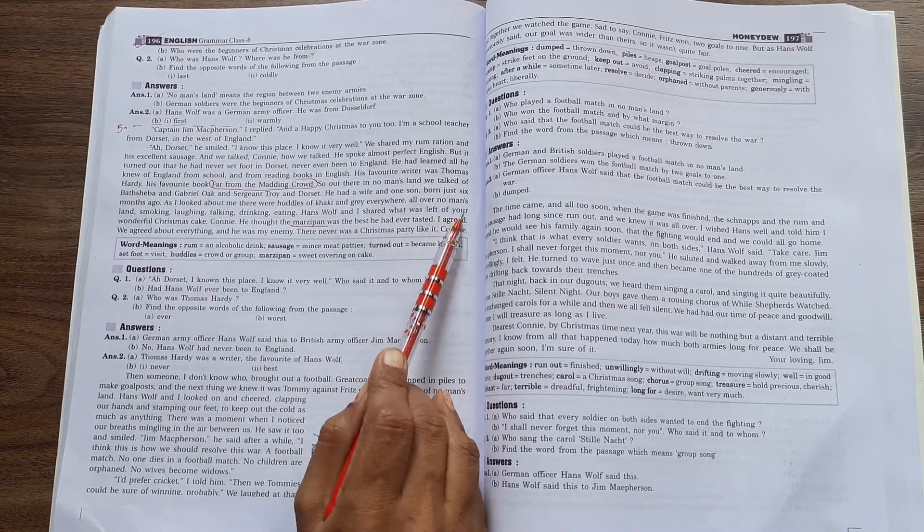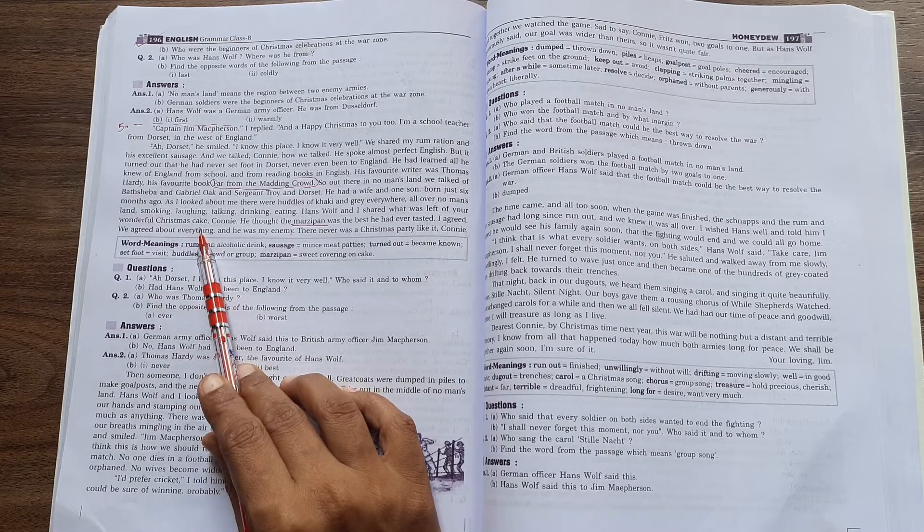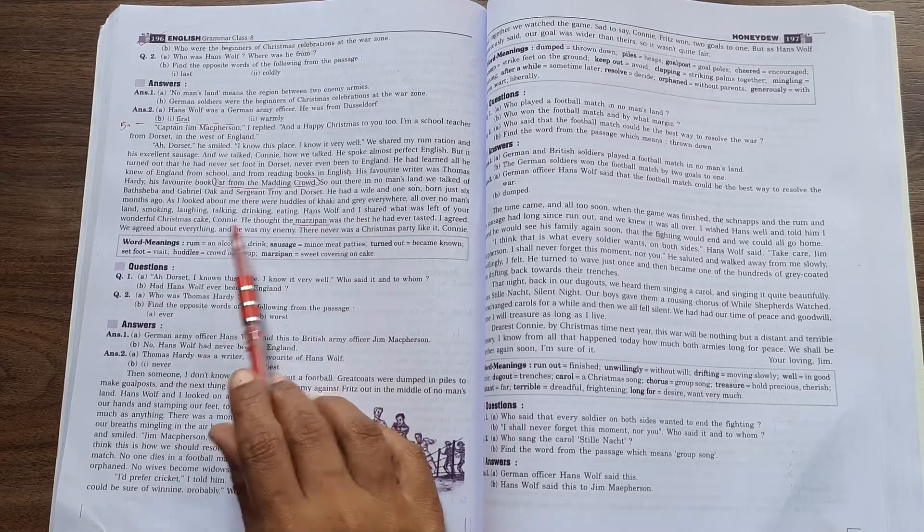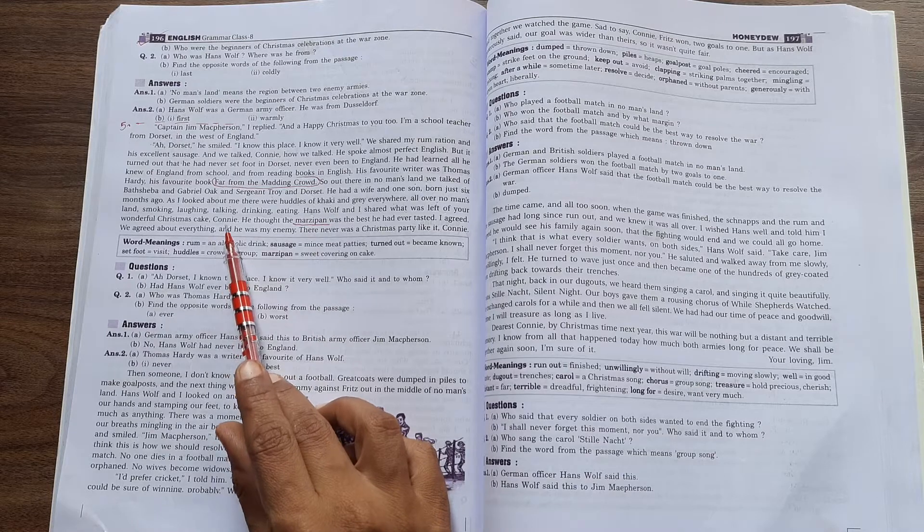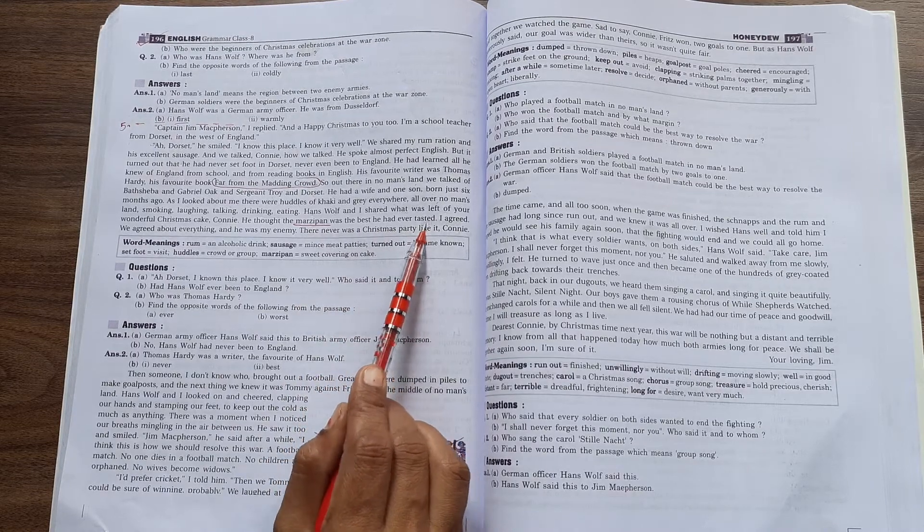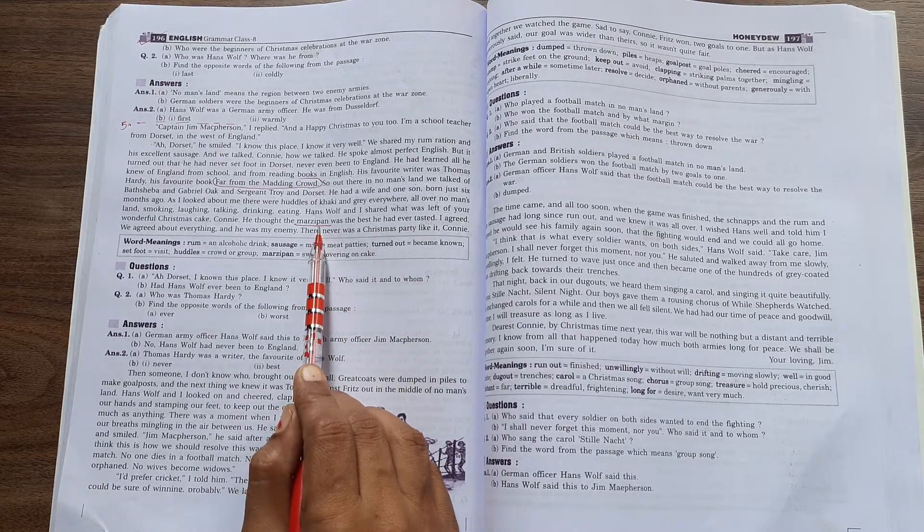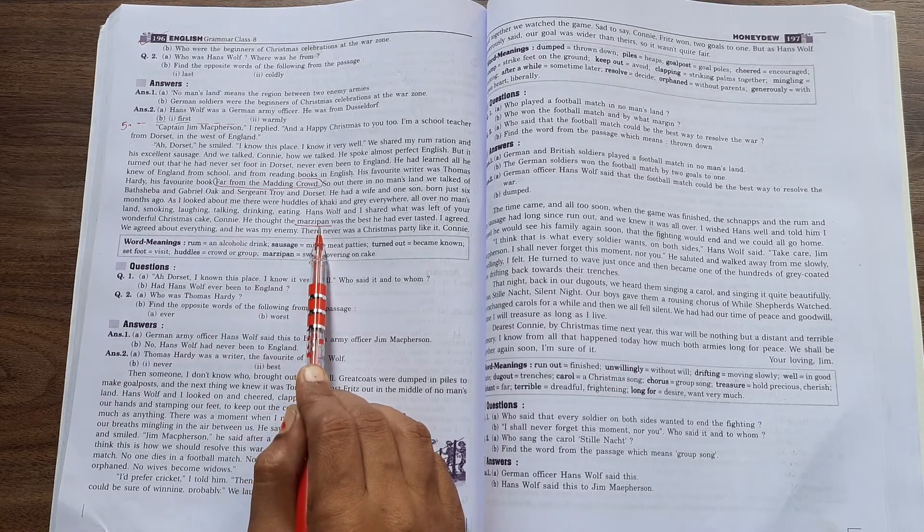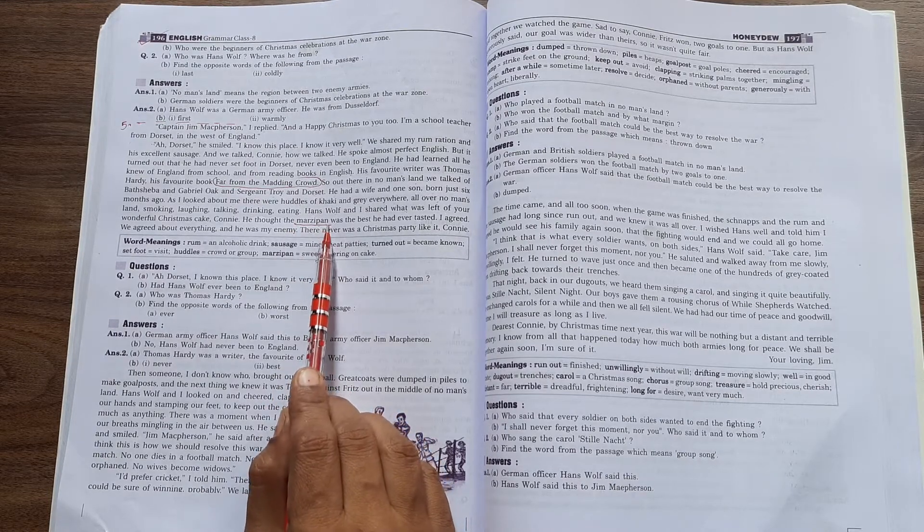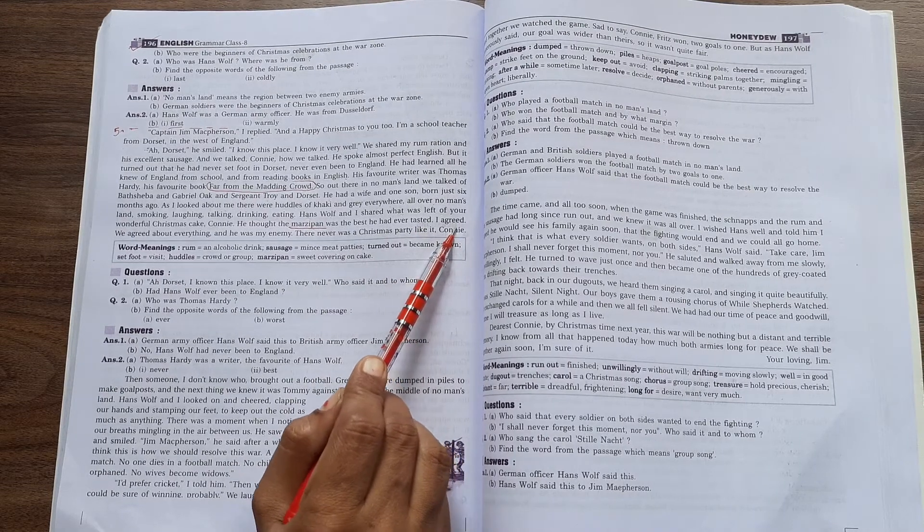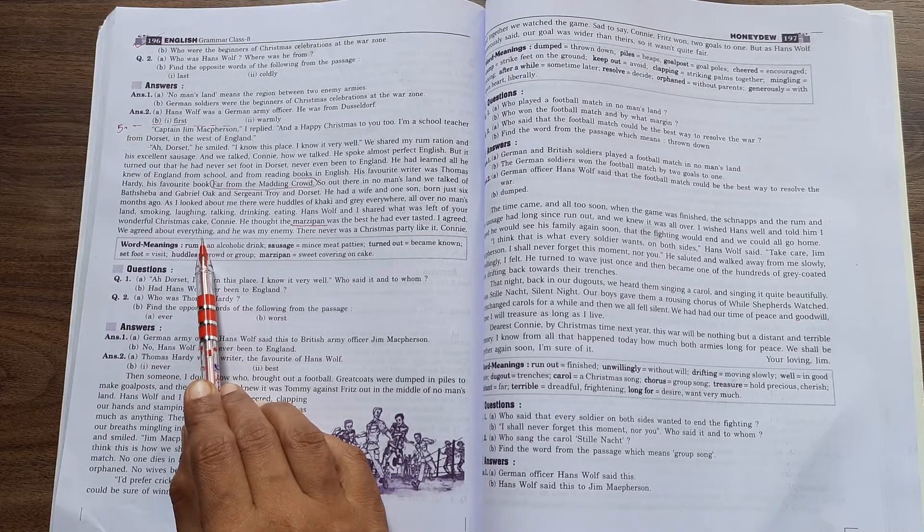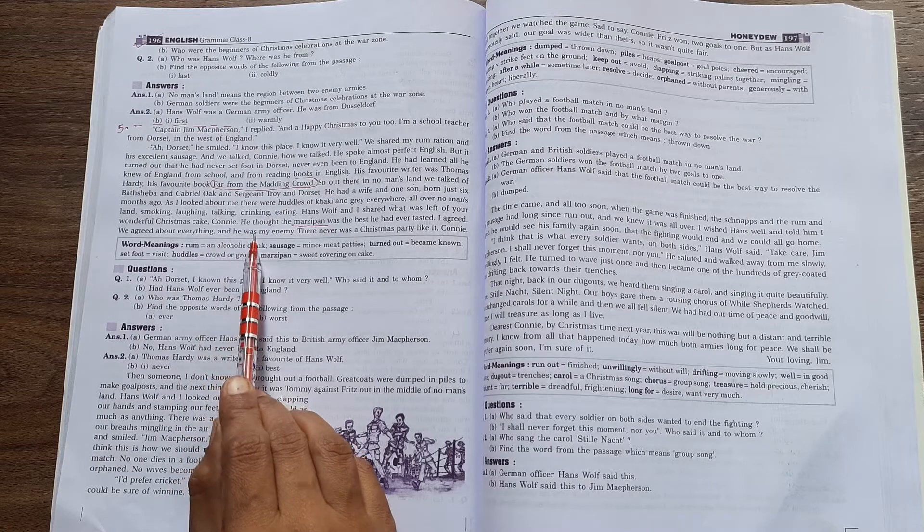Hans Wolf and I shared what was left of your wonderful Christmas cake. Hans Wolf and the author shared everything that was left. He thought the marzipan was the best he had ever tasted. Hans Wolf shared that his favorite dish was marzipan, he liked it the most. I agreed. We agreed about everything. We both agreed with each other's words. And he was my enemy.